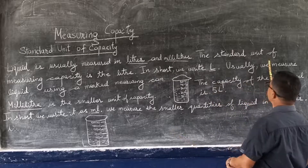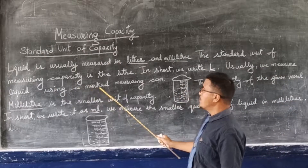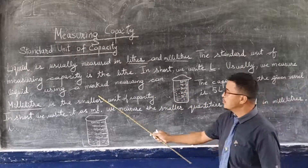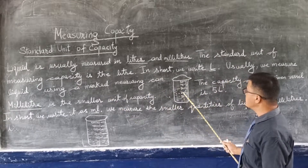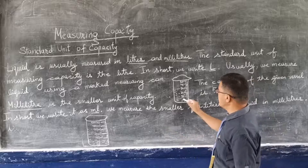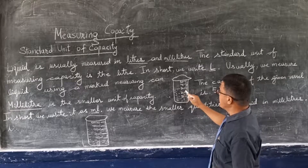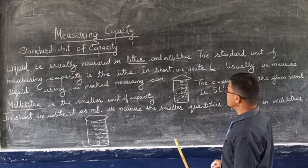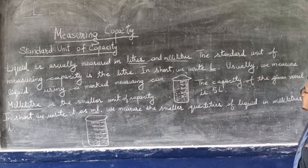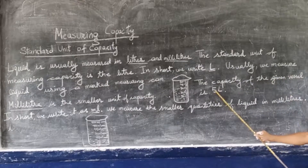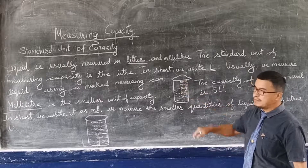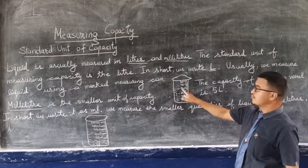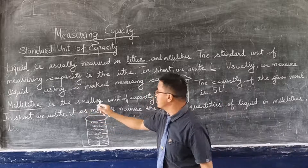Usually we measure liquid using a measuring can. Here you can see a measuring can with liquid inside. The liquid is at one litre, two litres, three litres - so there are three litres of liquid in this can. The total capacity of this can is five litres, but the liquid inside is three litres.